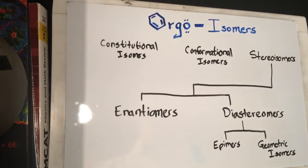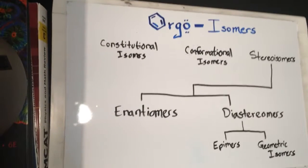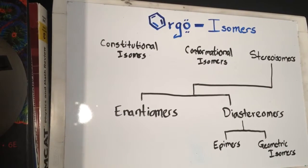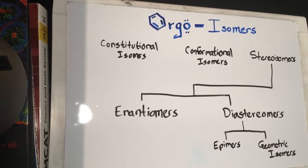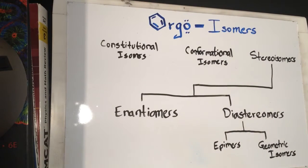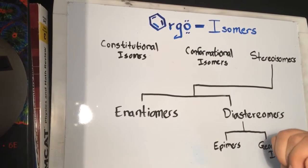Hey, what's up YouTube, this is Iconic here with Organic Chemistry Made Simple. In this video we're going to look at isomers. In your organic chemistry class you'll hear about enantiomers, diastereomers, all these fancy words, and in this video I'll try to explain how to differentiate between enantiomers versus diastereomers versus isomers and so on.